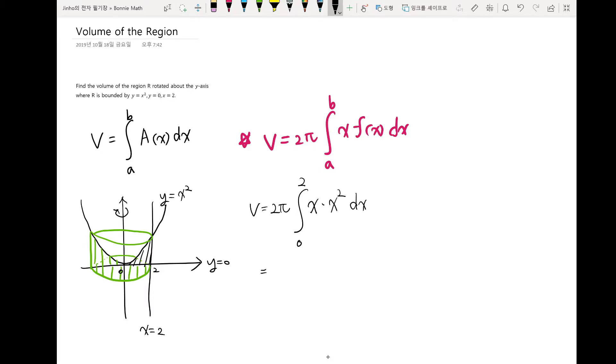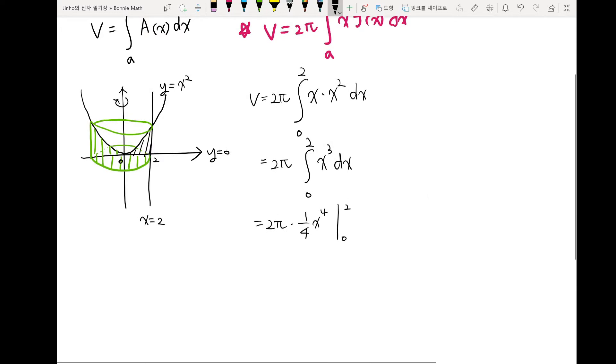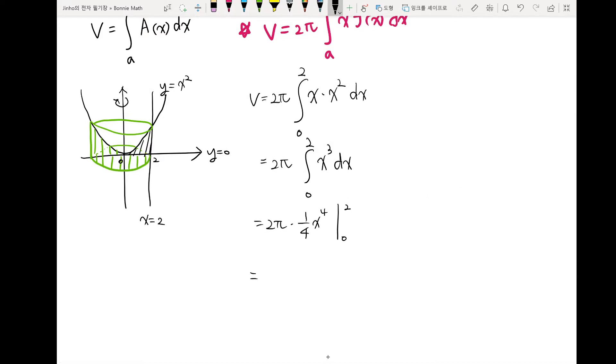So x square dx. So equal to 2π integral 0 to 2, x cube dx. So this gives us 2π times 1 over 4, x to the power 4, from 0 to 2. So it gives us π over 2 times 2 to the power 4 minus 0 to the power 4. So we get 8π.